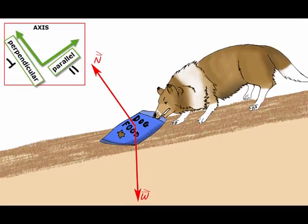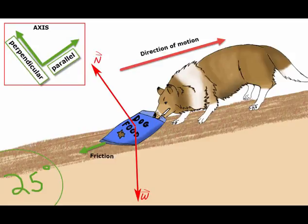This is because we have a parallel and a perpendicular axis. We'll use these symbols throughout the video: the two lines for parallel and the upside down T for perpendicular. We'll also say that the angle will be 25 degrees.